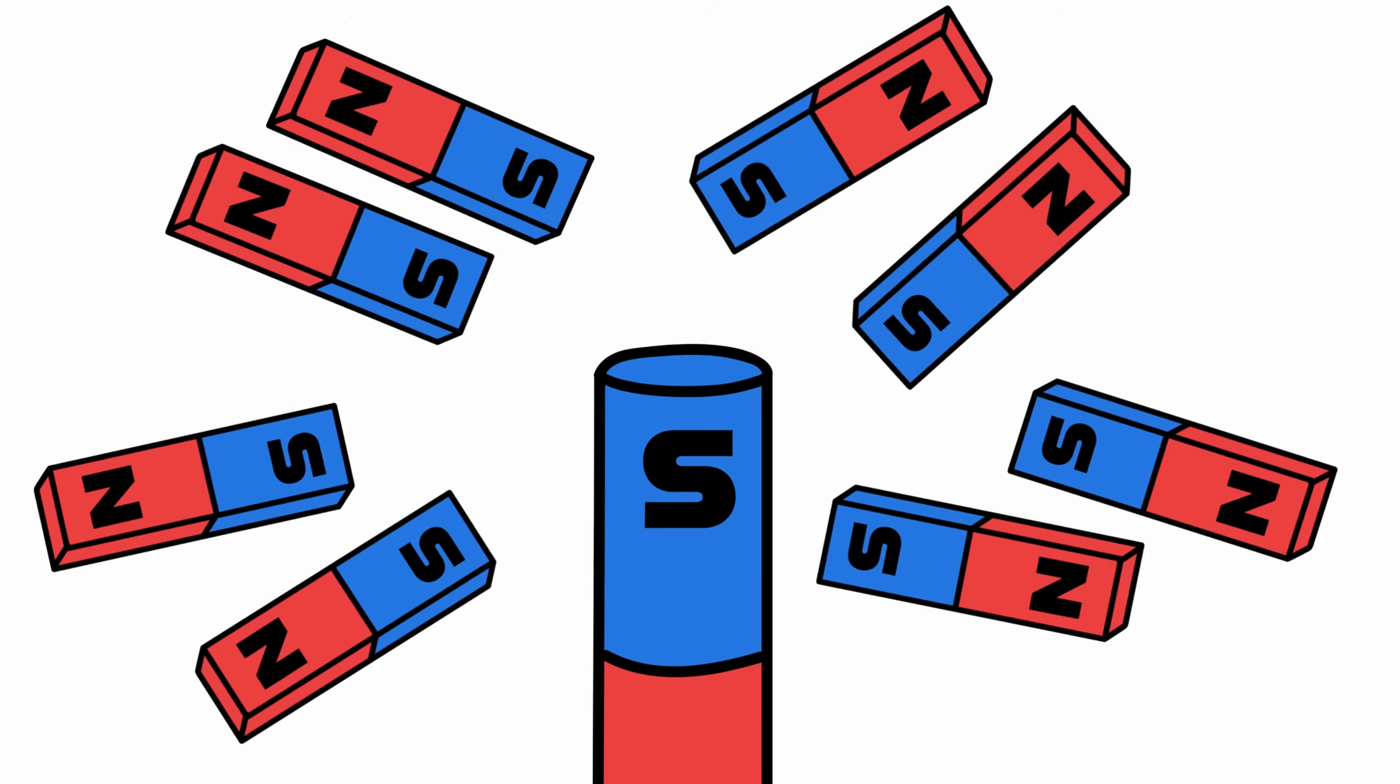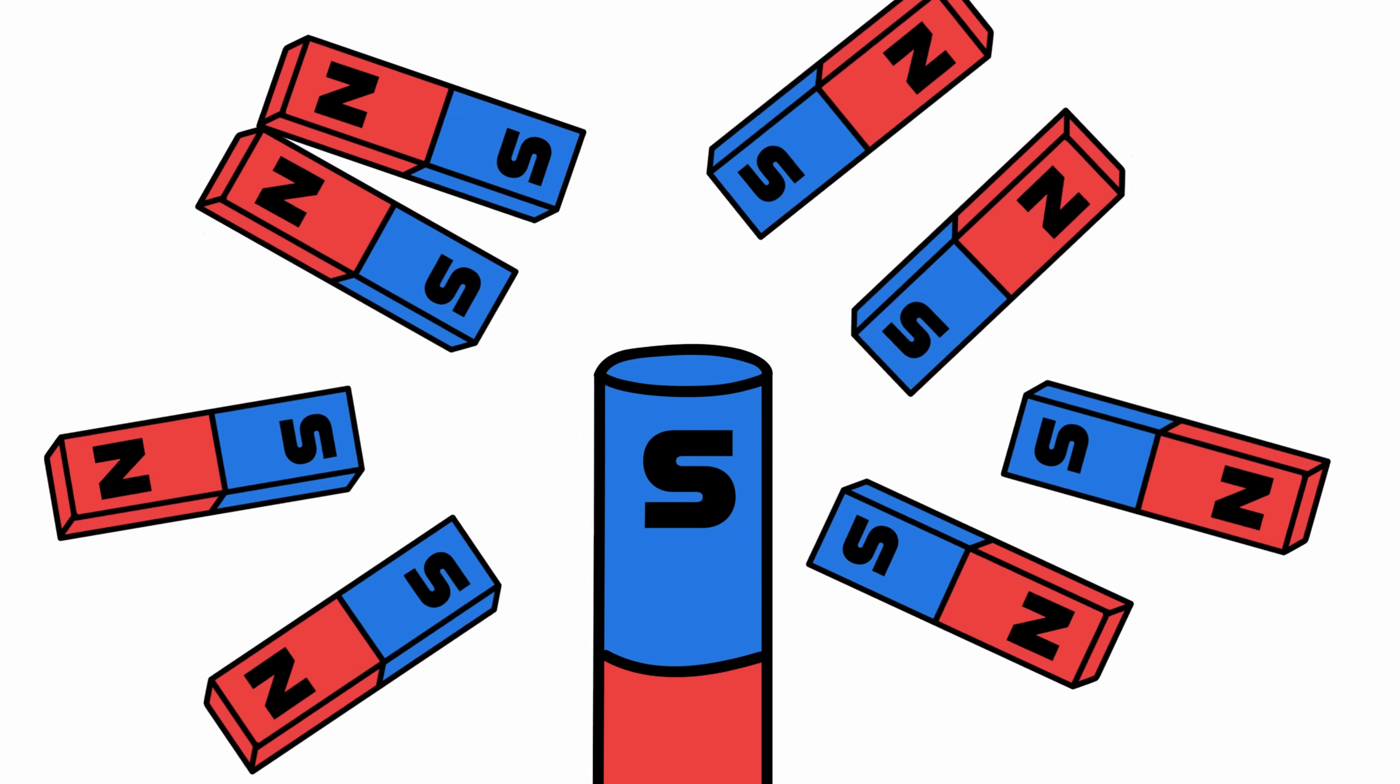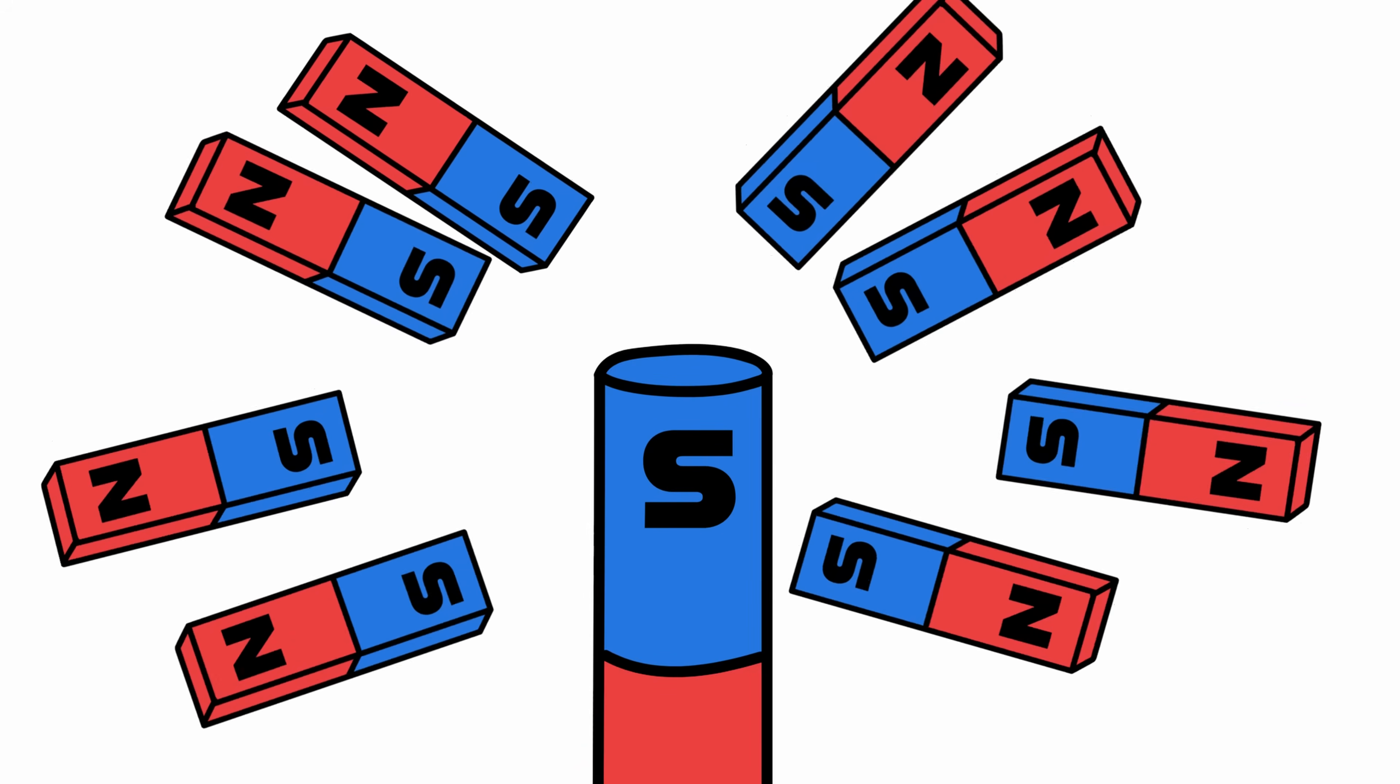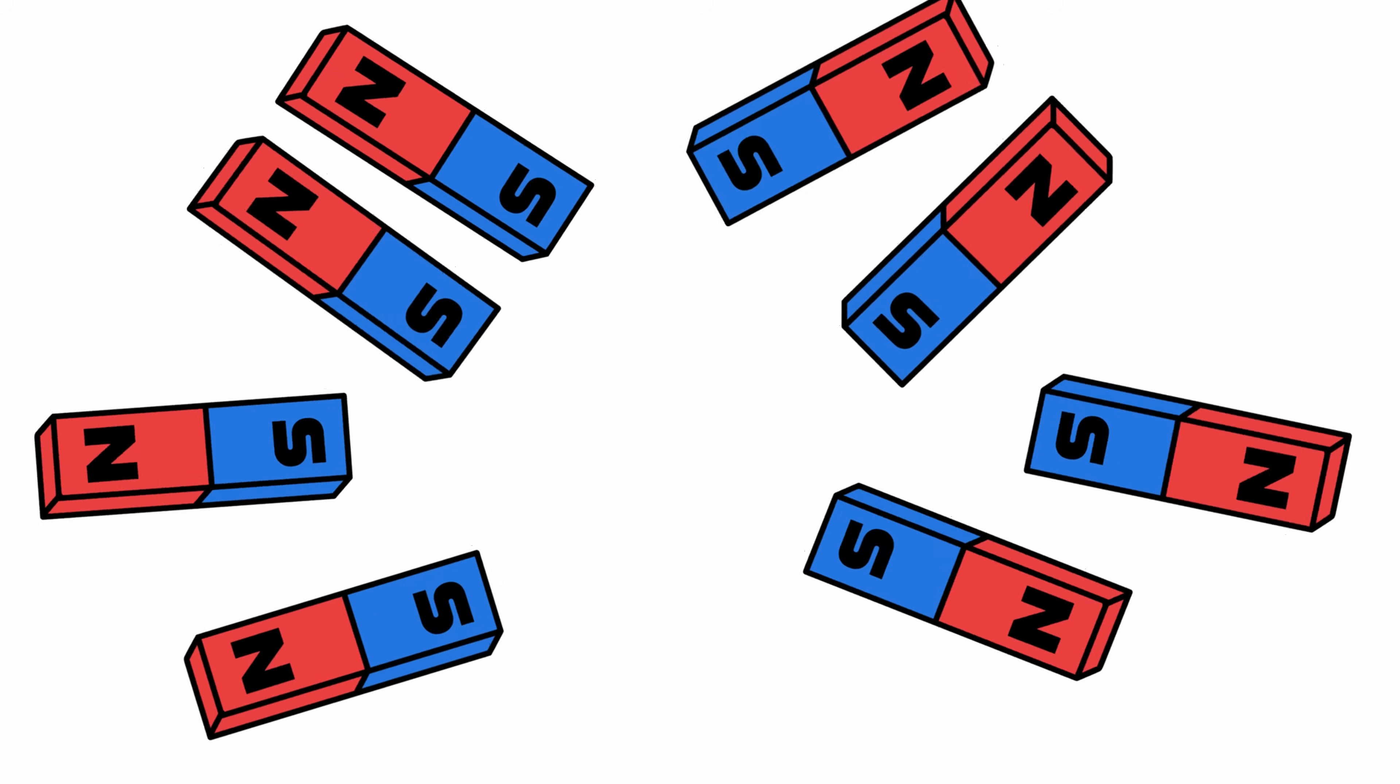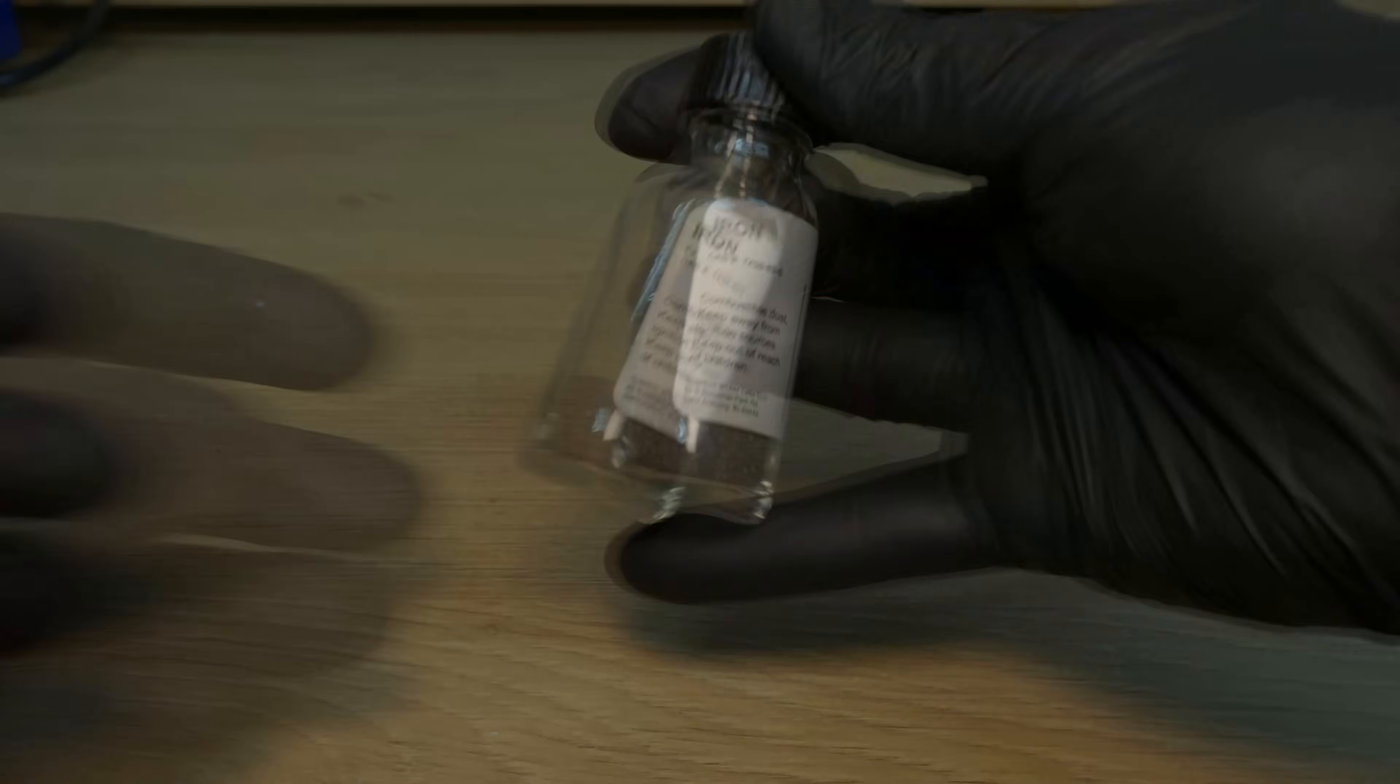But in ferromagnetic materials, think iron, nickel, cobalt, it's a different story. Their atoms like to naturally align in regions called domains. In an unmagnetized piece of iron, these domains are like separate teams pointing in random directions. But bring a strong magnet nearby, and all those tiny atomic magnets start to line up, like all teams playing on the same side. Now when the domains align, their magnetic fields add together into one big field. The metals become a magnet, at least temporarily, and jumps to the magnet in your hand. Remove the external magnet, and sometimes those domains stay aligned. Congratulations, you just magnetized a nail.